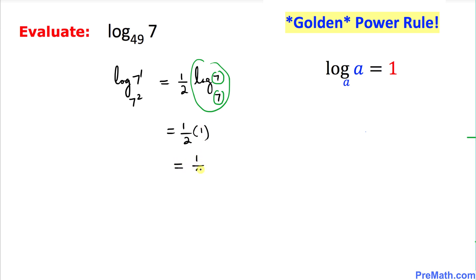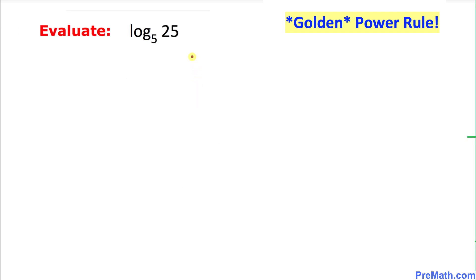Here is our next example: we are going to find the value of log of 25 with base 5. Let's tweak it a little — 25 could be written as 5 power 2, and 5 can be written as 5 power 1. So we write log of 5 power 2 with base 5 power 1.